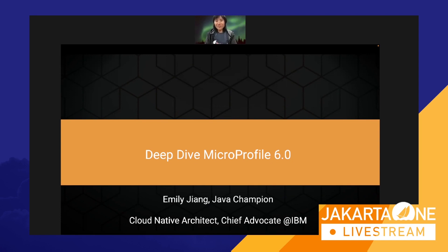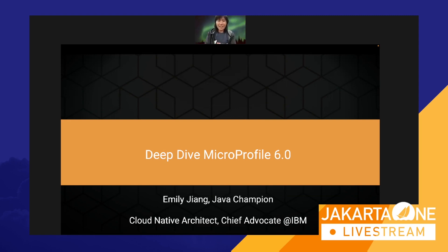I am Emily Jiang from IBM. I'm a Java Champion and also a cloud native architect and advocate for Liberty. I spend most of my time working on MicroProfile and its implementation in Open Liberty.